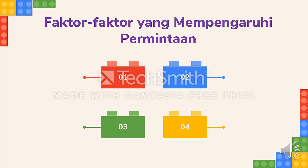Kemampuan manusia untuk melakukan permintaan terhadap barang dan jasa sangatlah terbatas. Keterbatasan manusia dalam melakukan permintaan dipengaruhi oleh faktor-faktor tertentu. Faktor pertama adalah harga barang. Harga suatu barang akan mempengaruhi banyaknya jumlah barang yang akan diminta. Jika harga barang naik maka jumlah barang yang diminta berkurang, dan sebaliknya apabila harga barang turun maka jumlah barang yang diminta bertambah banyak.